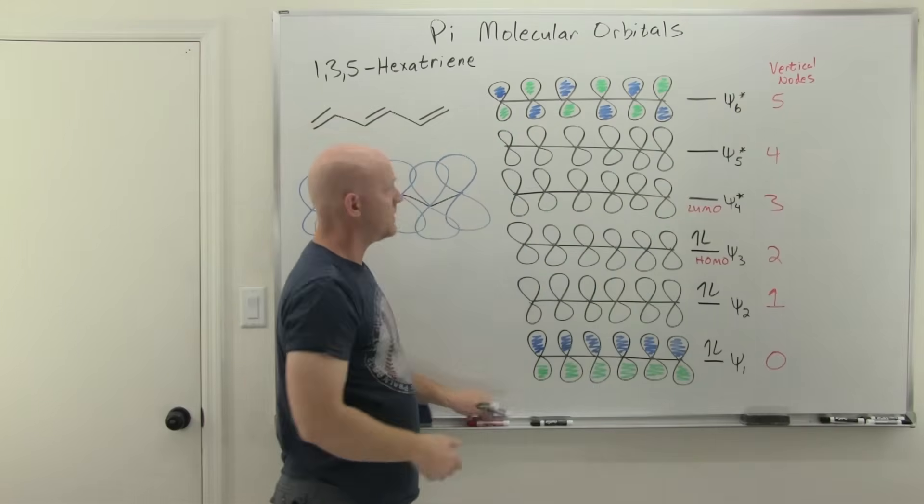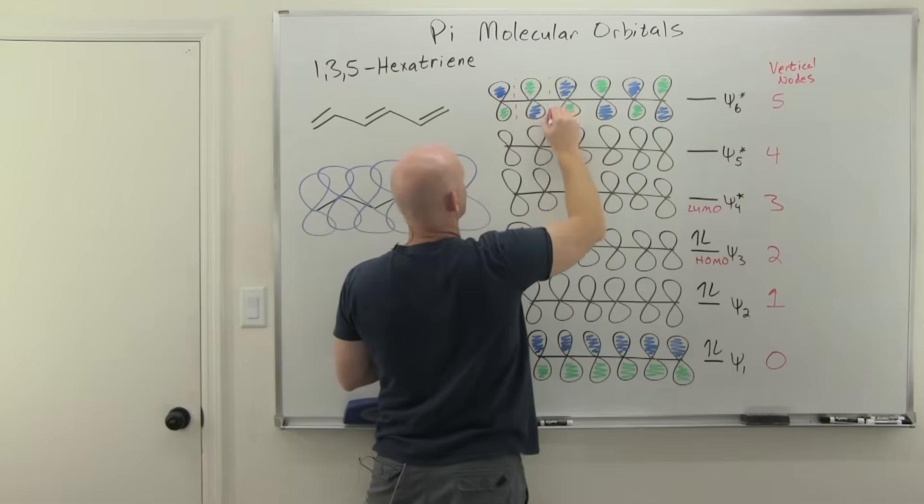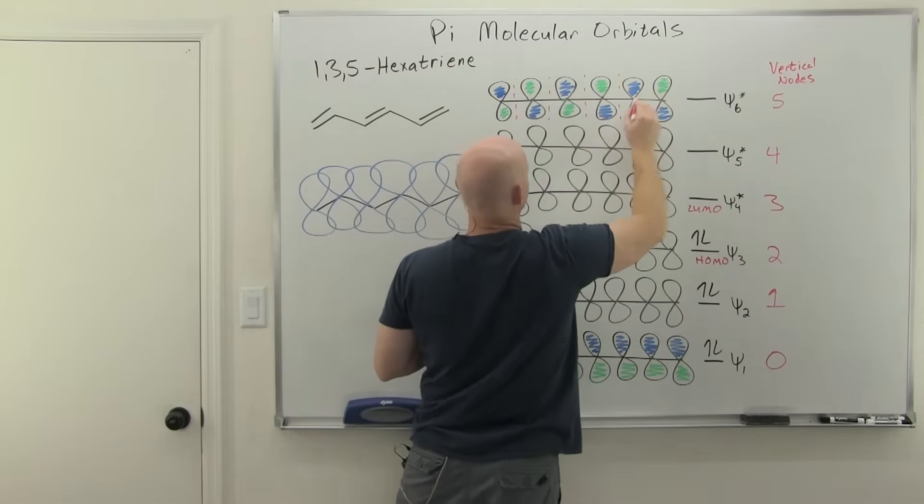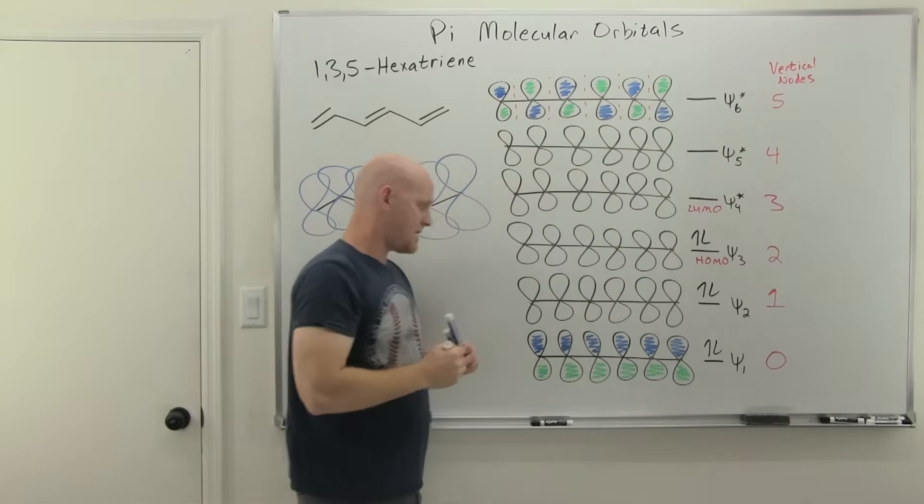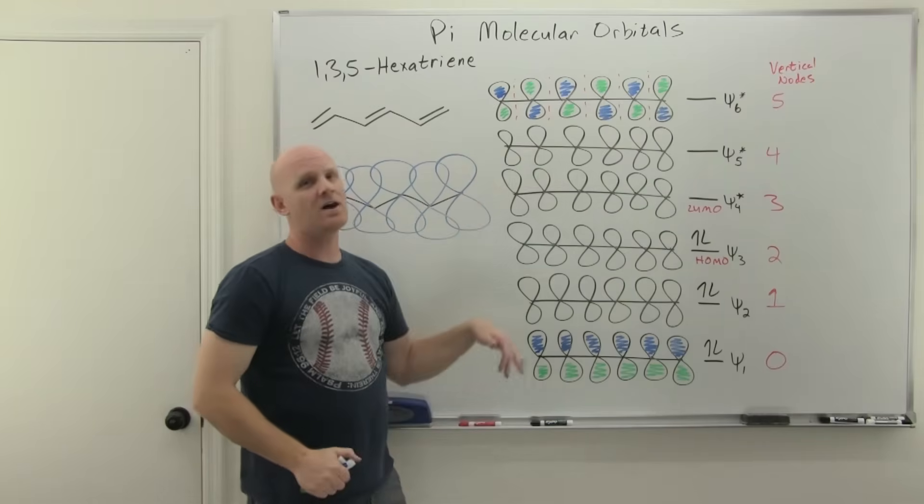Only by alternating all the way across do you end up getting the five nodes that you need. So here's where the trouble begins, is these ones in the middle, how do we draw them?